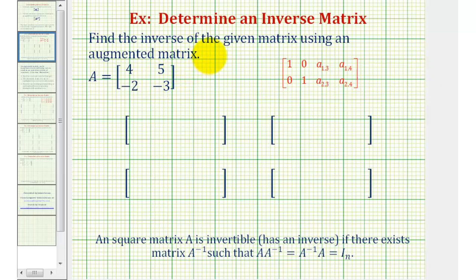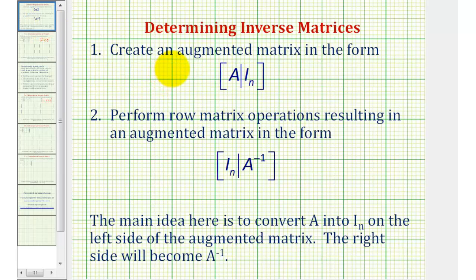Welcome to an example on how to find the inverse of a two-by-two matrix using an augmented matrix. We first start by creating an augmented matrix where the left side is the given square matrix and the right side is the identity matrix. Then we perform row operations resulting in an augmented matrix where the left side is the identity matrix and the right side becomes the inverse matrix.